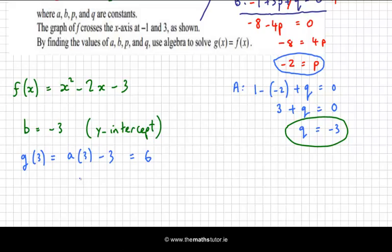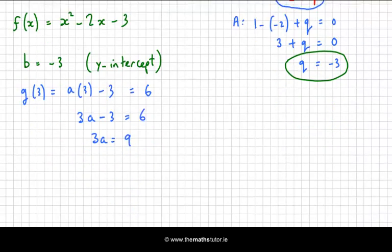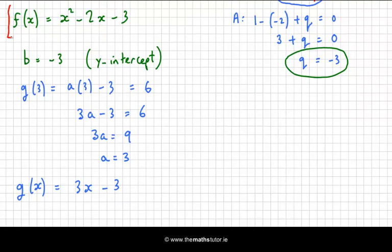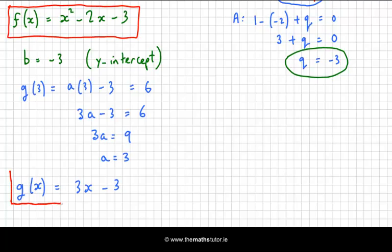This gives us a straightforward equation involving a, which says 3a - 3 = 6, so 3a = 9. That means a = 3. So now g(x) = 3x - 3. So I have found both functions using the graph and my knowledge of y-intercepts and roots.